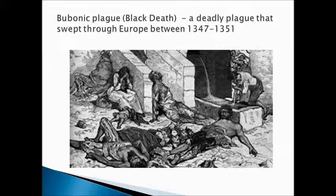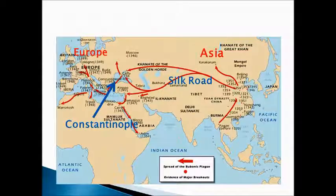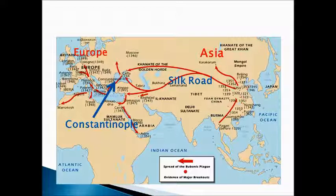The bubonic plague was a deadly plague that swept through Europe between 1347 and 1351 — in four years, at least 25 million people were dead. Regarding its origins: if you look at the map, the east side is Asia, and you'll see dates near China. It spread along the Silk Road trade route — the same route that spread Buddhism from India to China — and also spread the Black Death from Asia to Europe, going through the important trade city of Constantinople. Merchants and traders along the Silk Road didn't know they were spreading it; it wasn't done on purpose.